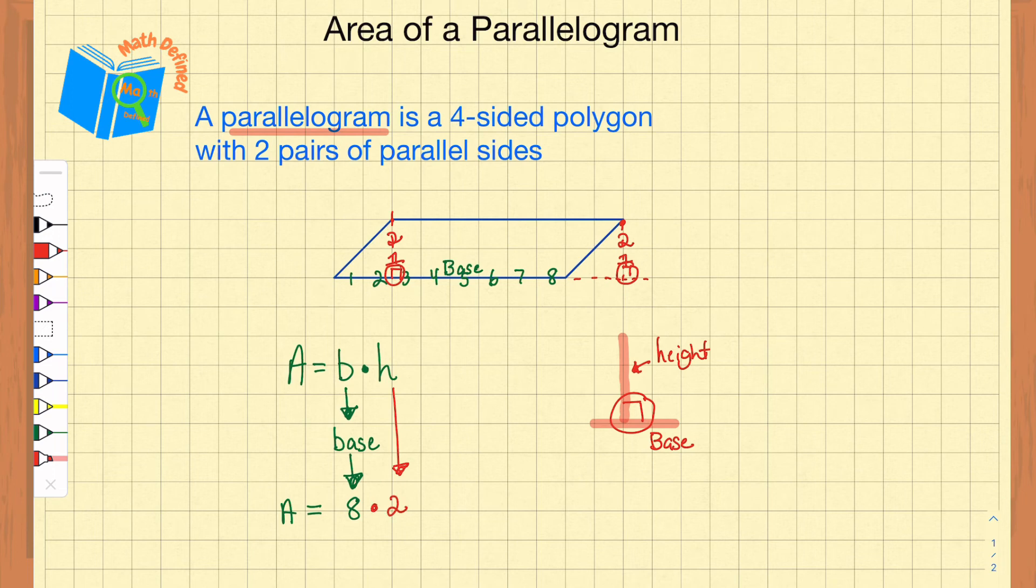Then all I need to do is multiply those two numbers together. And eight times two gives me 16. And my label will be centimeters squared.